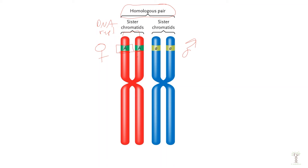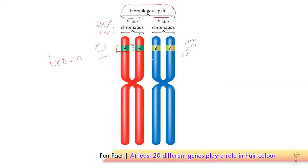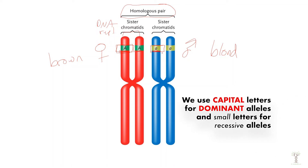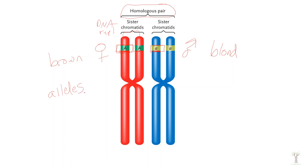Let's suppose we have a gene called A for hair color. If mom has a brown hair color gene and dad has a blonde hair color gene, we can show these are different versions of the gene by using a capital letter or a small letter. These different versions of the genes are called alleles. Sometimes the alleles could be the same — dad could also have a brown hair allele.